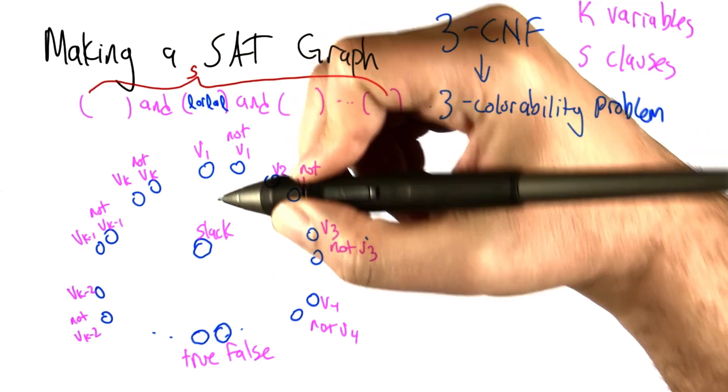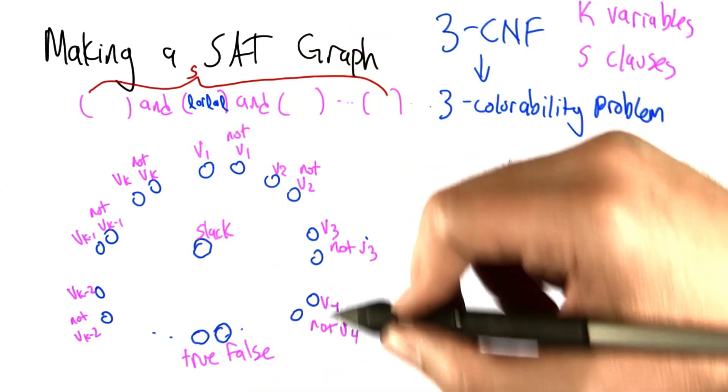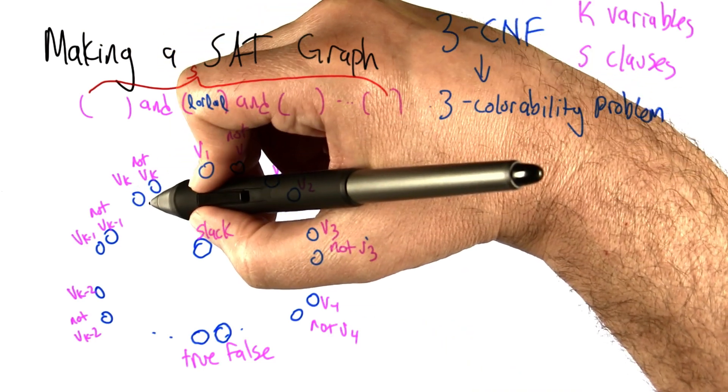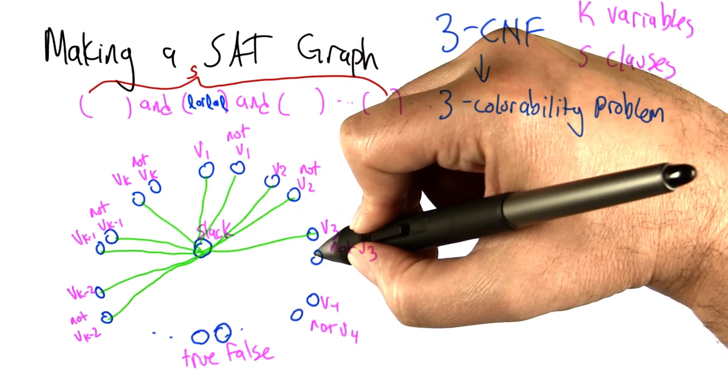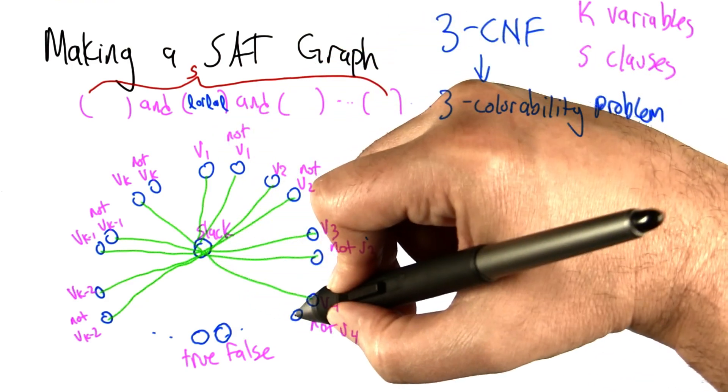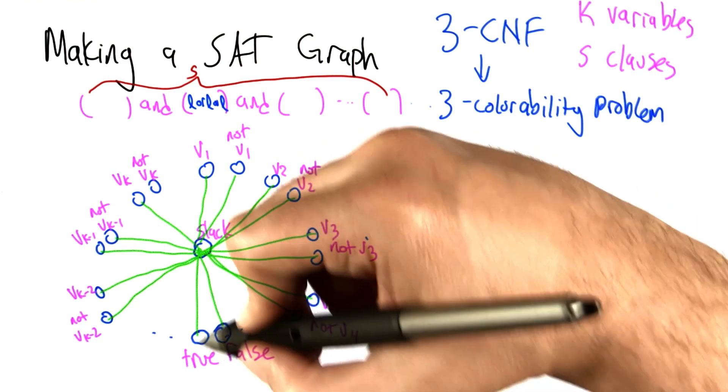Now we're going to add 3 more nodes and we'll call them true, false, and slack. We're going to connect up the nodes initially as follows. Each literal will be connected to slack, including true and false. We're going to connect true and false to each other.